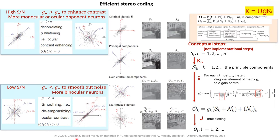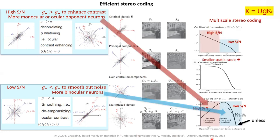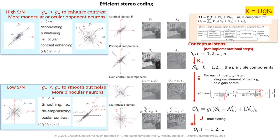Now let's apply this to spatial coding. Each image has n pixels, but instead of n pixels, we use n spatial frequencies — from low to high. Natural images have a 1/k² power spectrum (one-over-k-squared), meaning low frequencies have high signal power and high frequencies have low signal power. In spatial coding, the PCA is actually a Fourier transform. So after the PCA/Fourier transform, gain control is applied to each Fourier component, then an inverse Fourier transform brings you back — you can predict the spatial receptive field just like that.